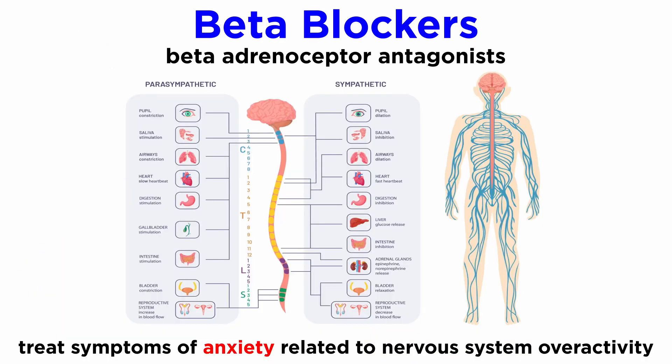Beta blockers are also used to treat the symptoms of anxiety related to overactivity in the sympathetic nervous system, as well as more complicated psychopharmacological mechanisms that are beyond the scope of this tutorial.